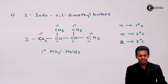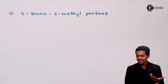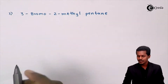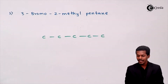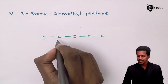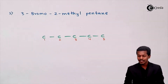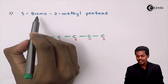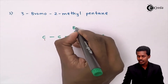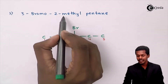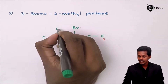The next example is 3-bromo-2-methyl-pentane. The parent name is pentane, so we have five carbon atoms in a straight chain: 1, 2, 3, 4, 5. The substituents are bromo attached to carbon 3, and a methyl group attached to carbon 2. So bromine is placed at position 3 and a CH3 group is placed at position 2.